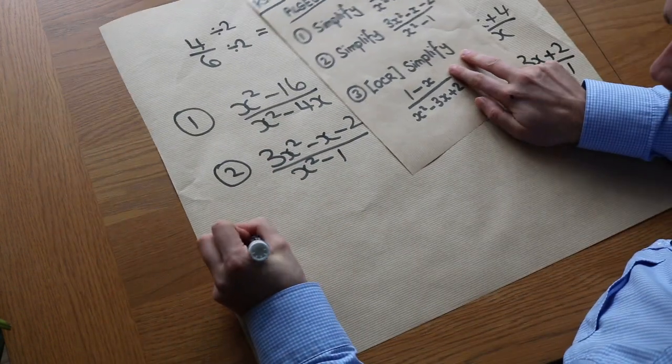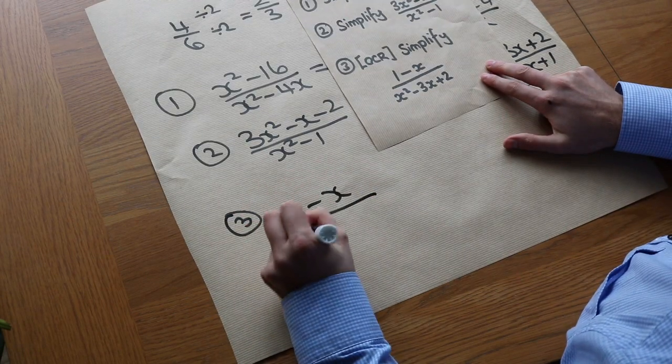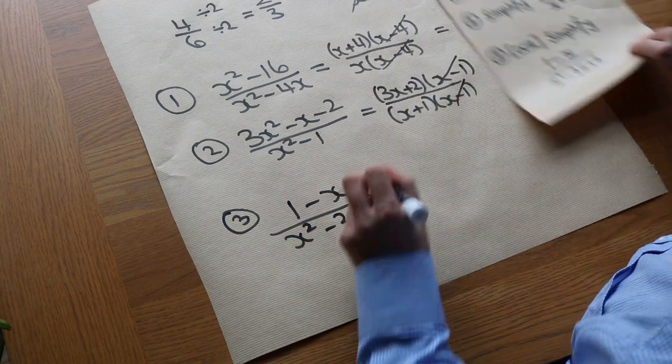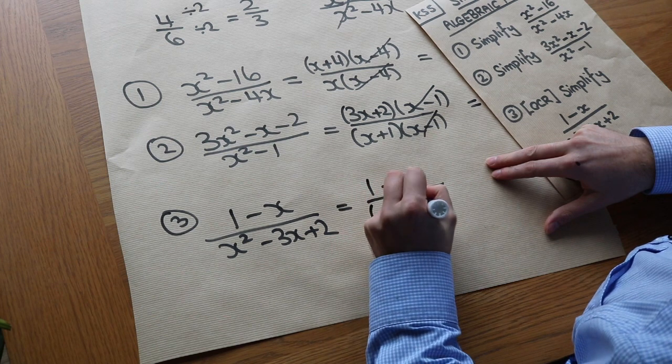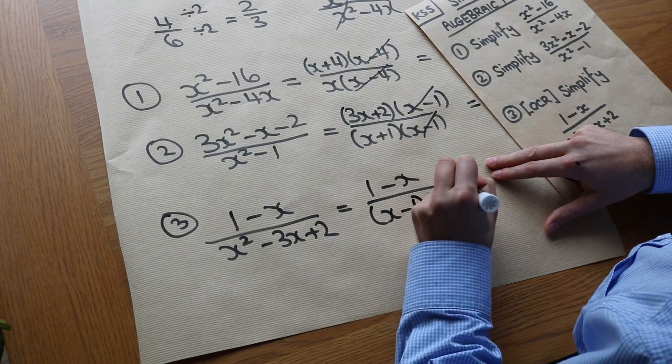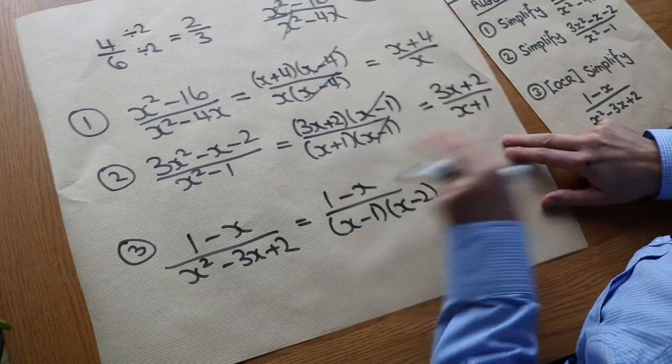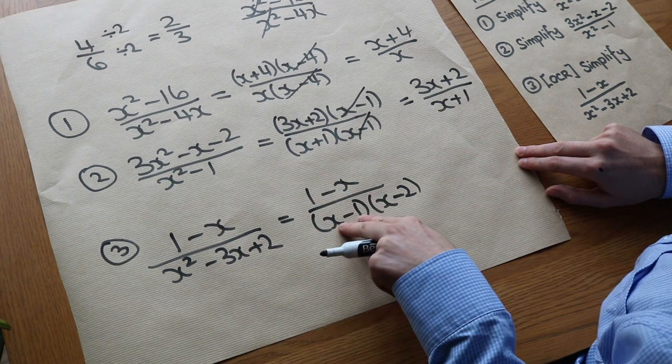Now this last one is just slightly harder. You'll see the subtlety regarding this in a second. If I factorise the denominator, I'm going to get x minus 1, x minus 2. Now neither of these brackets exactly matches the numerator here, but can you see that this here is a negation of this?